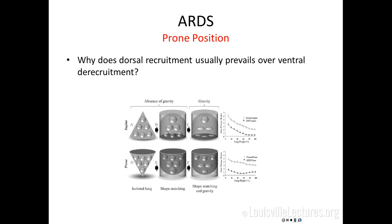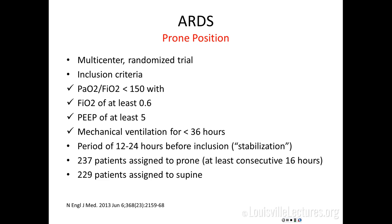Dorsal recruitment prevails over ventral derecruitment because in the supine position the chest has an almost triangle-shaped form, and gravity sets densities to accumulate in the dorsal region. When the patient is pronated, gravity still acts, but the shape of the chest causes densities to be more homogeneously distributed. Prior studies confirmed that prone position leads to improved oxygenation, but whether prone position improves hard outcomes such as mortality was uncertain before a more recent study.